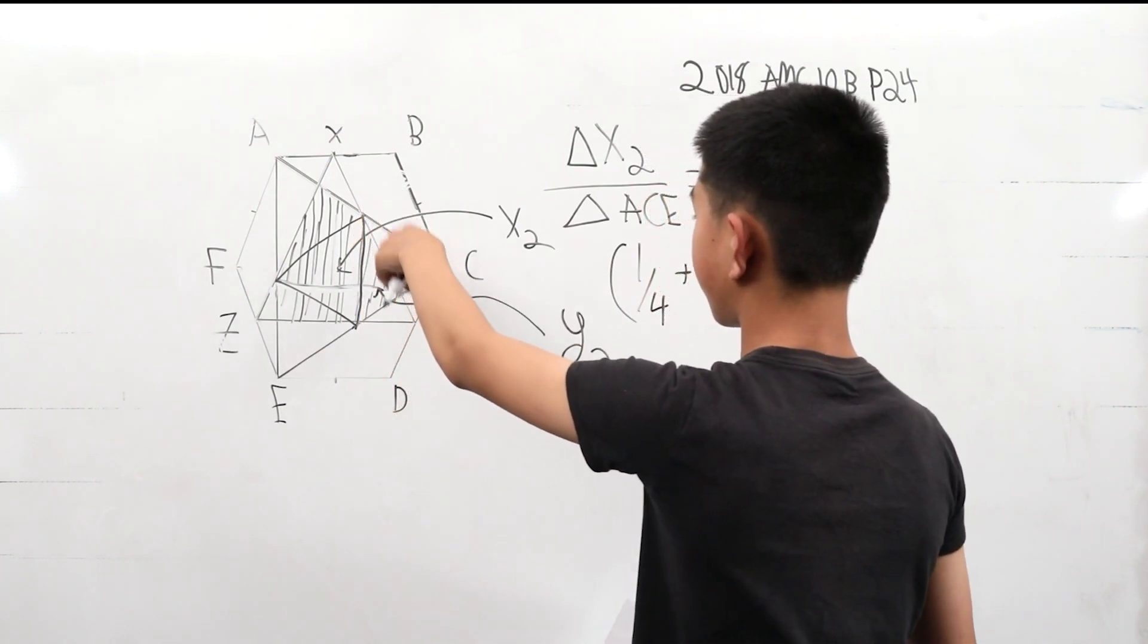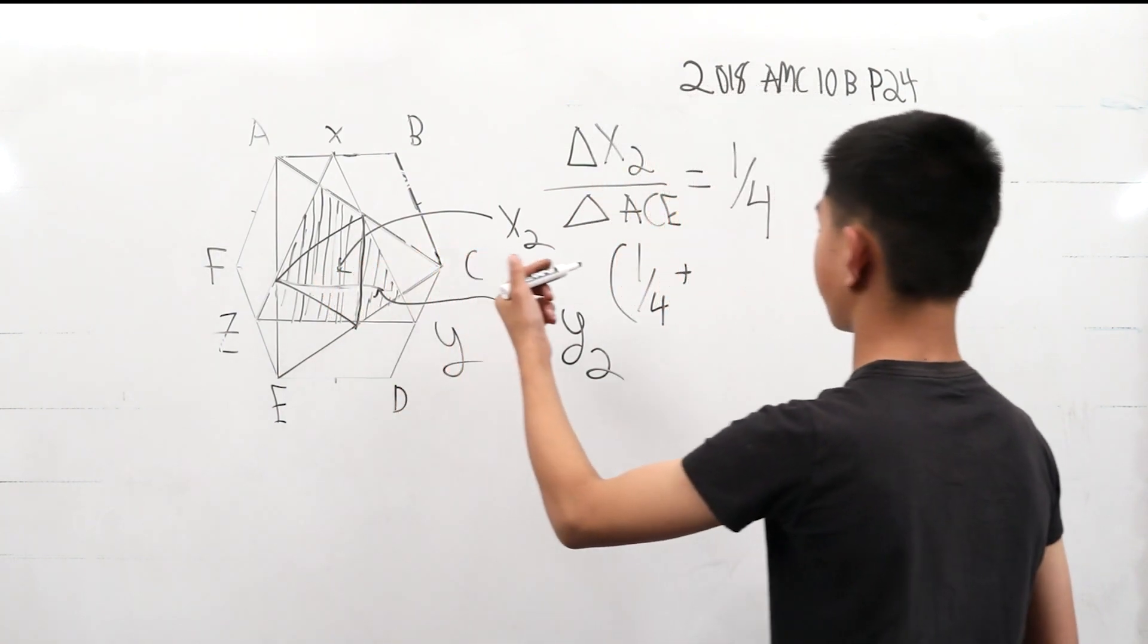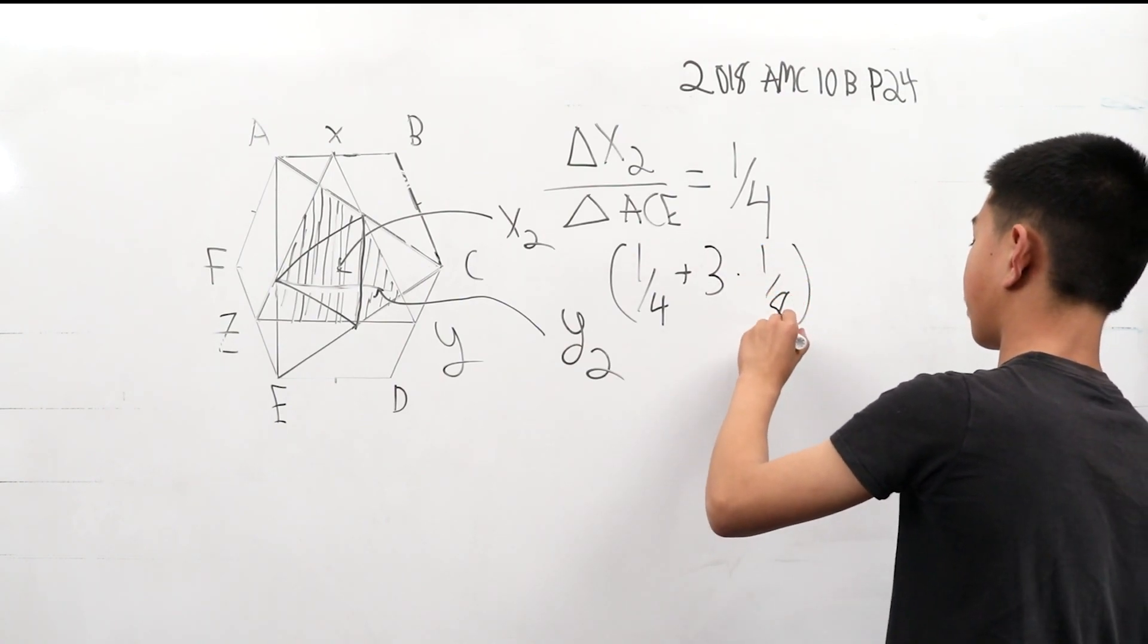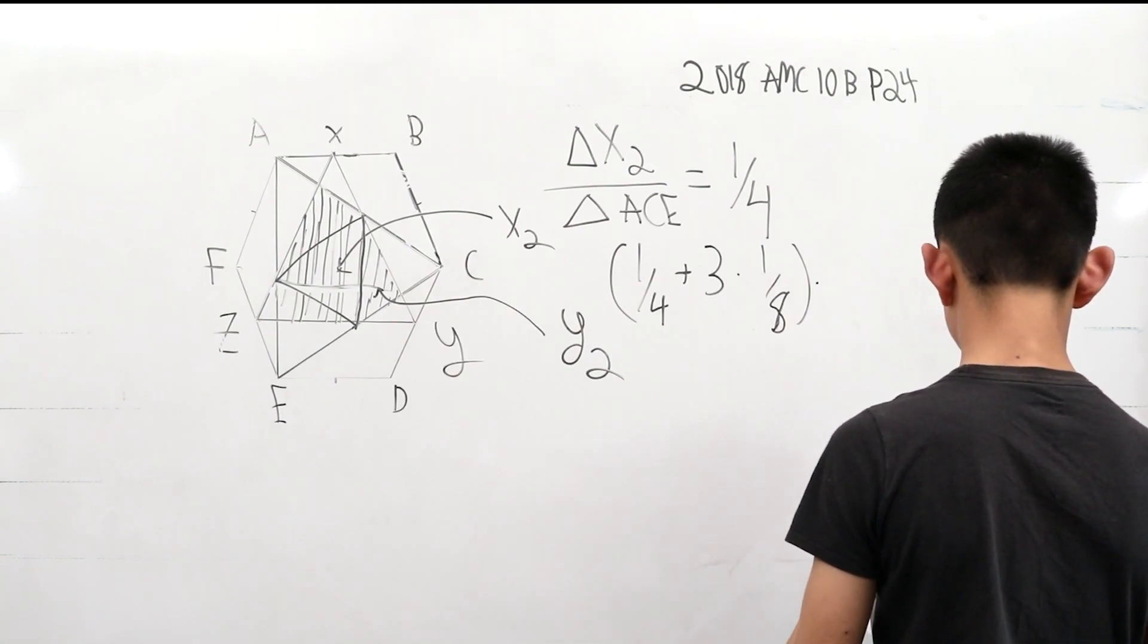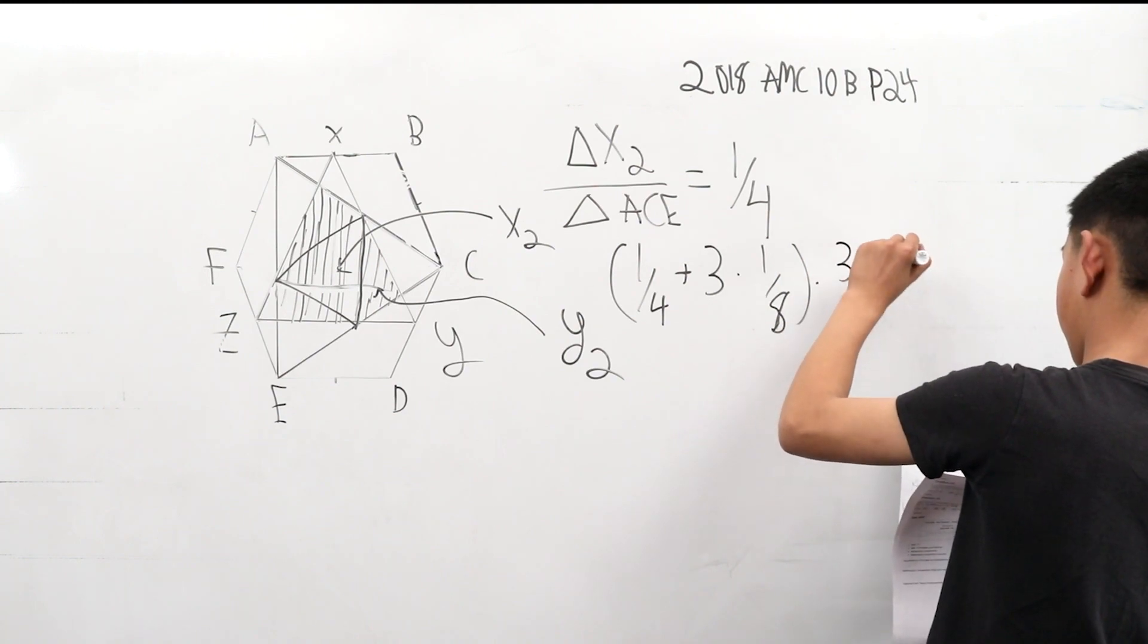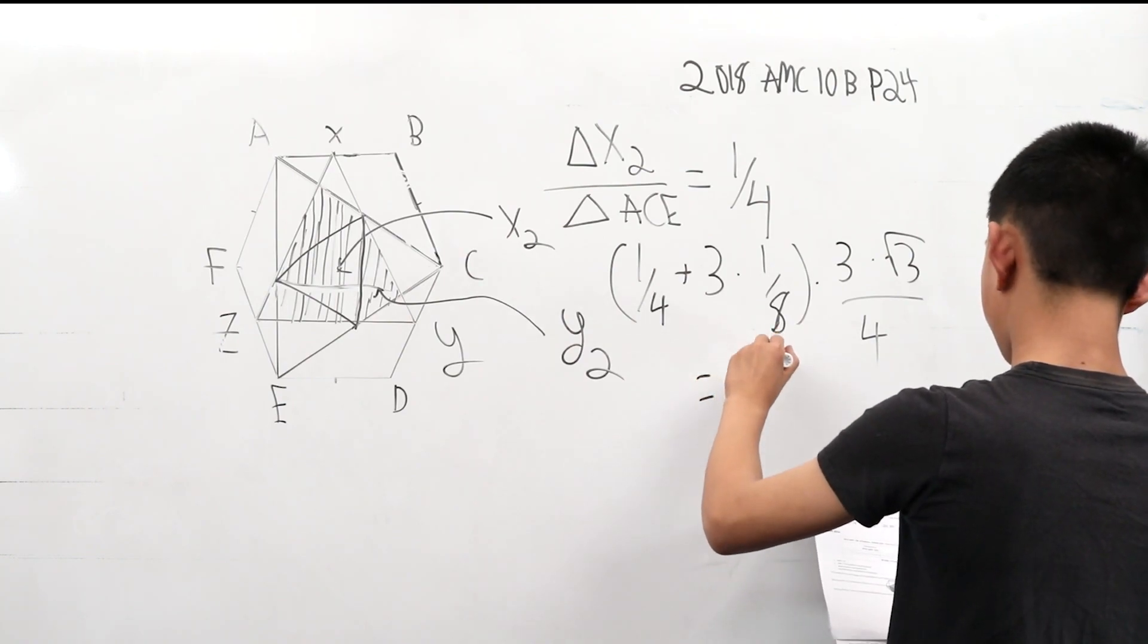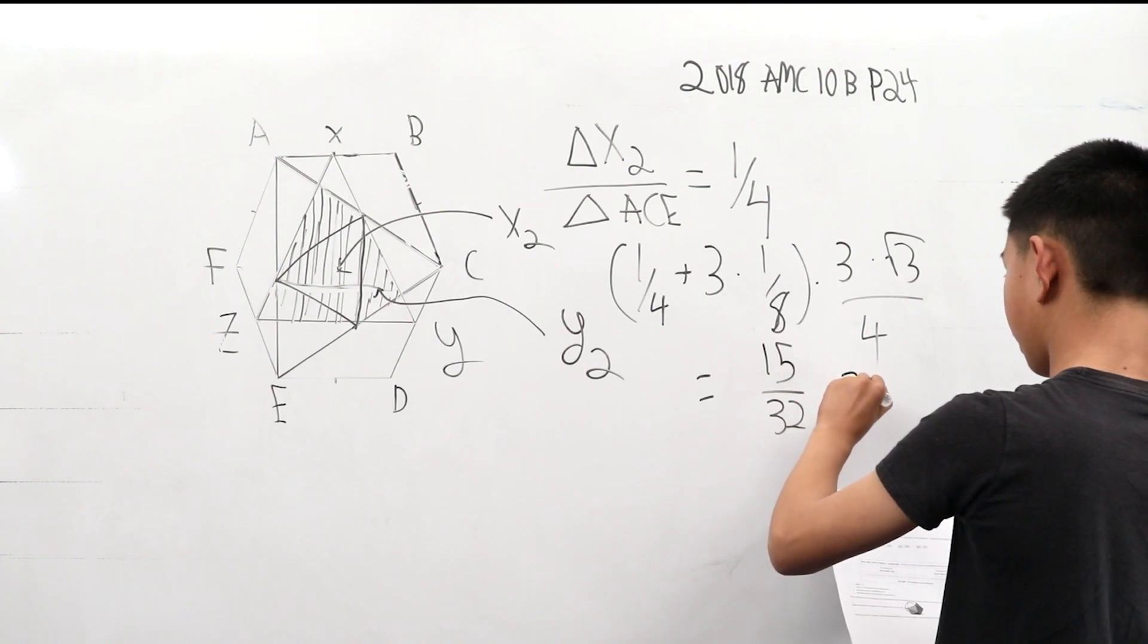these Ys are exactly cut in half from this X2 triangle. So this is 3 times 1 eighth times, and we have to multiply it by the area of the big triangle ACE, which can be found with 3 times root 3 over 4, which gives us our answer of 15 over 32 times the square root of 3.